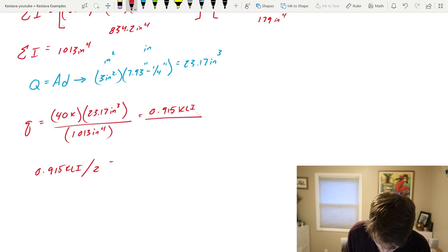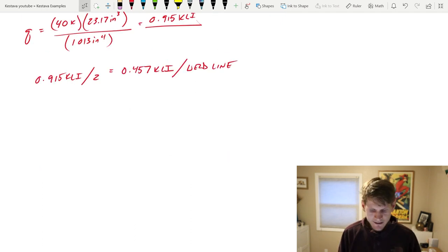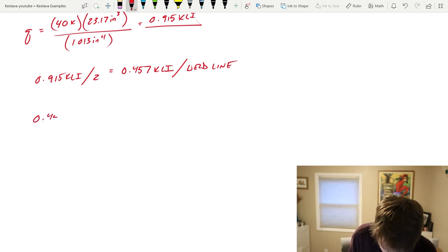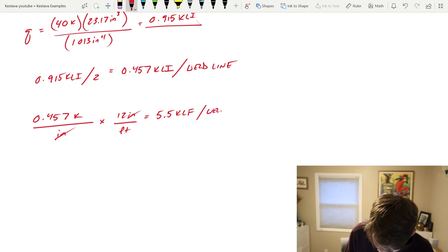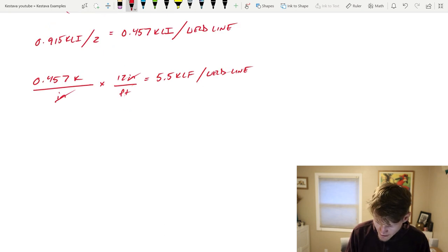There's many ways depending on how you think about this to cut this thing up. This is your demand but now you have two lines of weld so I'm going to divide this by two. That gets us 0.457 KLI per weld line. Next I want to get that KLI into feet: 0.457 kips over inches times 12 inches per foot, cross out, gets you 5.5 KLF per weld line.